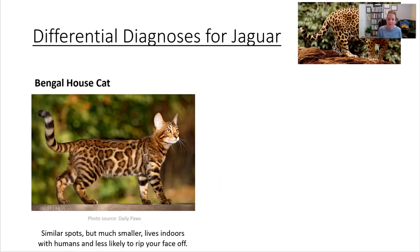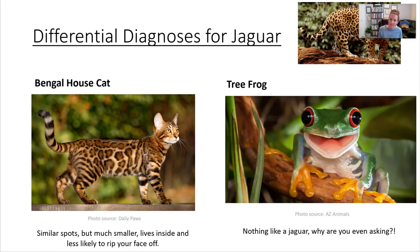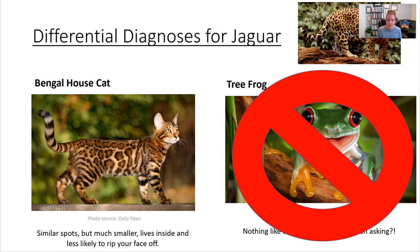A third differential diagnosis might be a Bengal house cat, which has similar spots but is much smaller, cuter, cuddlier, lives indoors with humans, and is less likely to rip your face off. You would not see tree frog listed as a differential diagnosis for jaguar, because they are nothing alike. Just like there are many animal species, the DSM has more than 70 disorders, and it wouldn't be practical to compare all of them — just the ones that have some overlap.